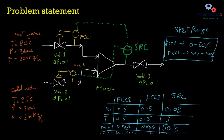Let's move to the problem statement. We have a very simple mixing system. We have two input streams: one is hot water and the other is cold water. These two streams are mixed in the mixer, and the outlet stream we want at a desired temperature. To control the temperature, we are using a split range controller that measures the temperature at the output of the mixer, compares it with the set point, and generates an output sent to two different sub-controllers — both are flow controllers. The first one is for the hot water valve and the second one is for cold water.